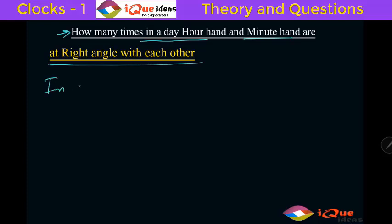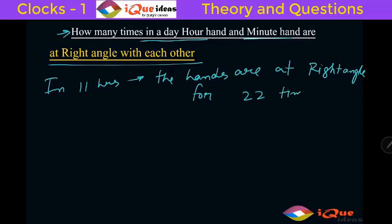We have already seen that in 11 hours the hands are at right angle for how many times? For 22 times, we have already seen that.